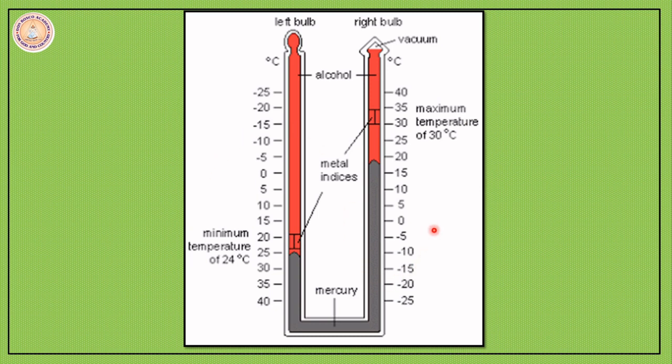We have a diagram which is almost the same as that in your book. This Six's maximum and minimum thermometer consists of a U-tube thermometer. It's a glass tube having the shape of the letter U. It is filled with alcohol and mercury: alcohol in red and mercury in grey. It has got two metal indices.